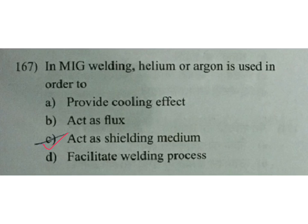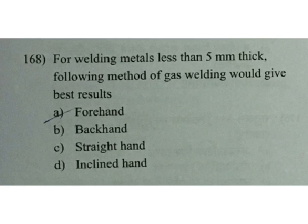For welding metals less than 5 mm thick, the following method of gas welding would give the best result. For metals less than 5 mm thickness — gas welding. A is the answer.